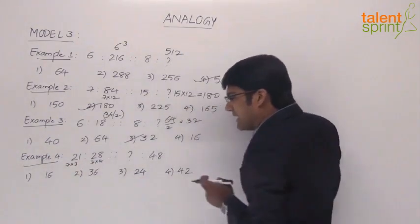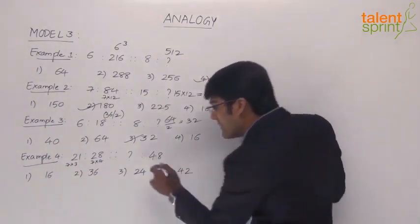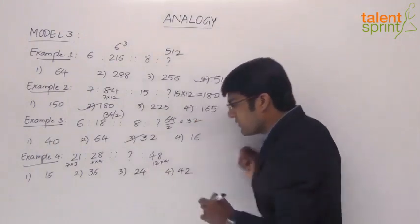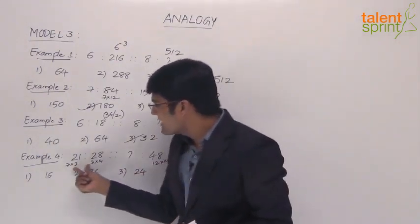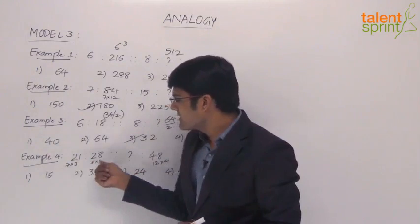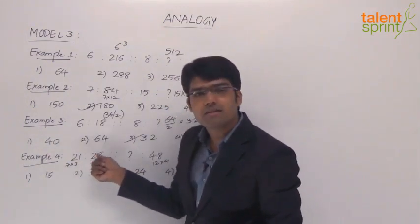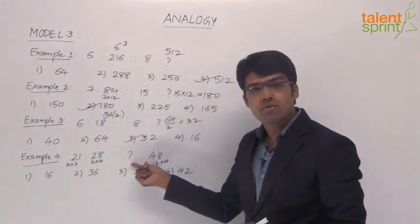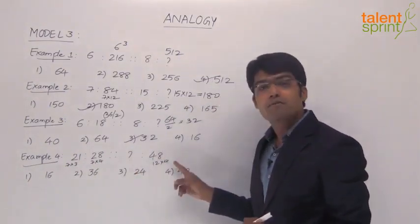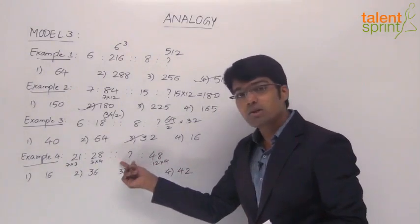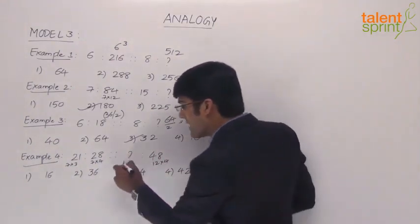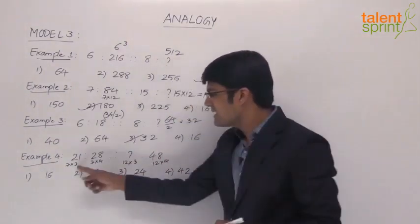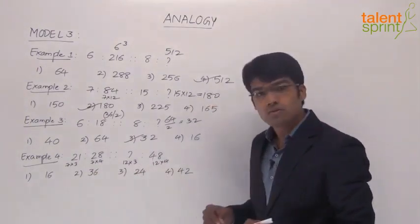Now what is this 48? 48 can be taken as 12 times 4. If you observe the first two numbers, the ratio is 3 is to 4. If you try to simplify this, the ratio becomes 3 is to 4. So if that is the logic, then here also the ratio has to be 3 is to 4. 48 is 12 into 4. So what should be this number? 12 into 3, so that the ratio becomes 3 is to 4. So here it is 3 is to 4 and here as well we get 3 is to 4.